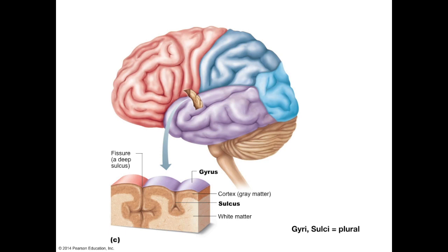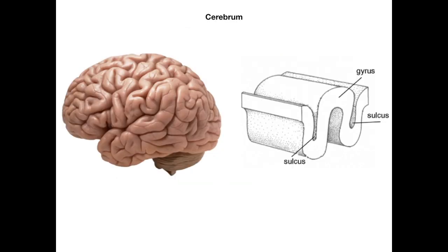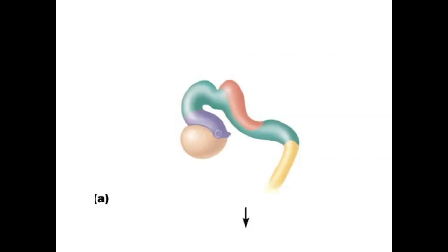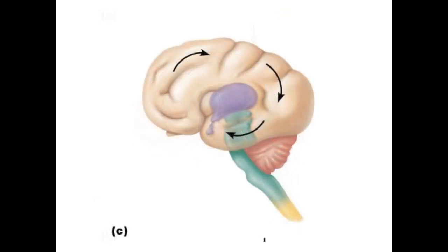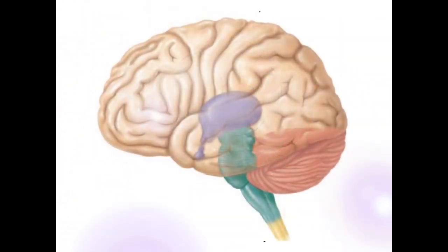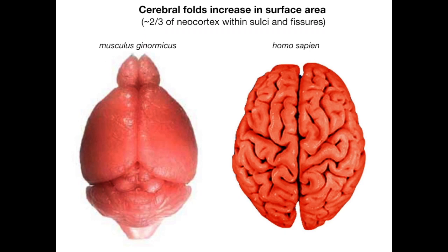The rationale for sulci and gyri — the folds — is the same reason we see dermal papillae and microvilli: it allows a great increase in surface area within the same space. The massive expansion of the cerebrum during development requires these folds in order to keep your head a reasonable size — which might otherwise be the size of a large beach ball. About two-thirds of your neocortex is within these sulci and gyri; compared to a smooth mouse brain scaled to the same dimensions, we would still have vastly more neocortex for enhanced computing power.